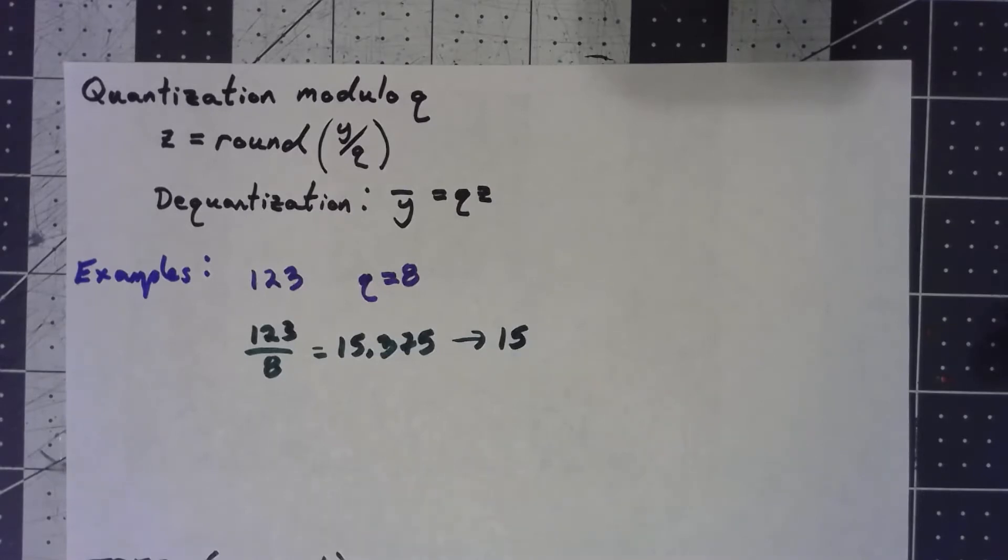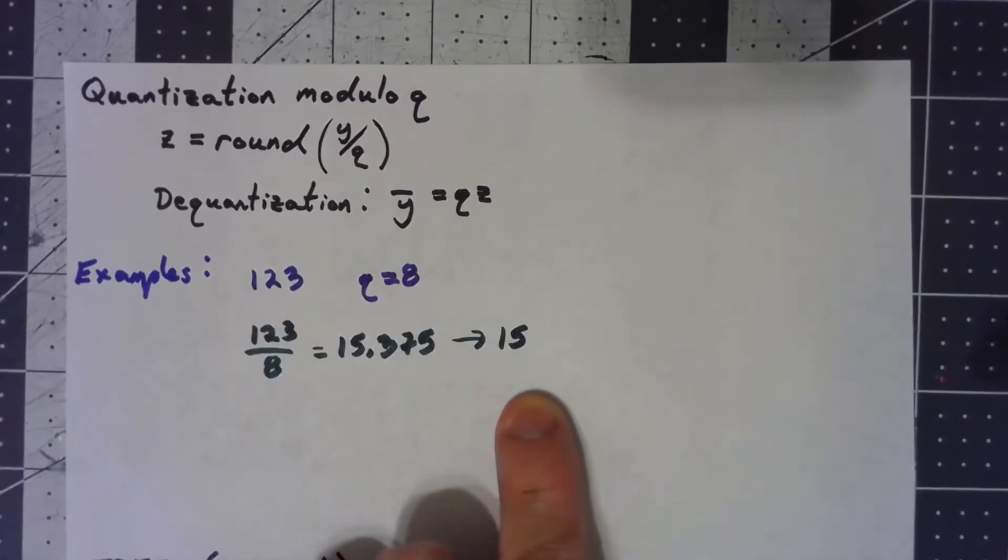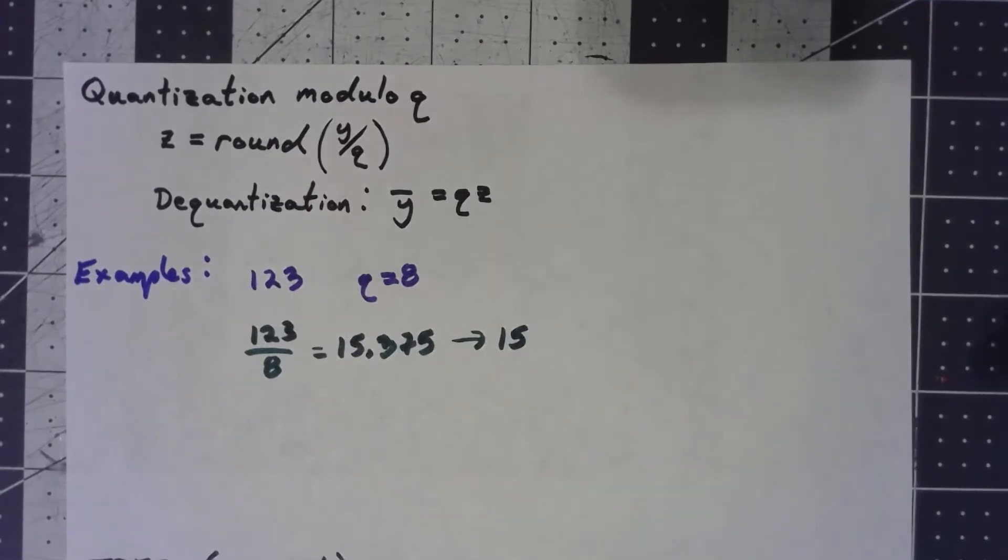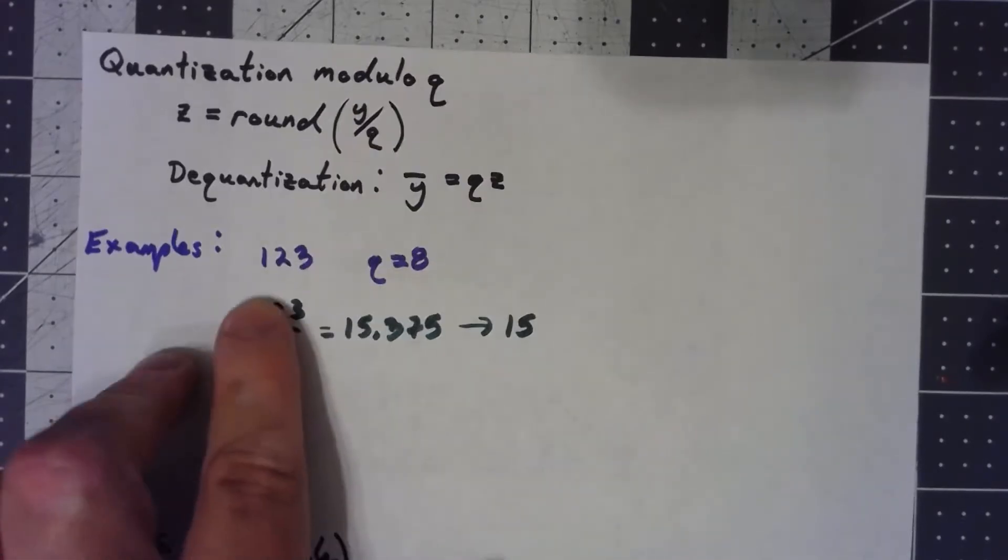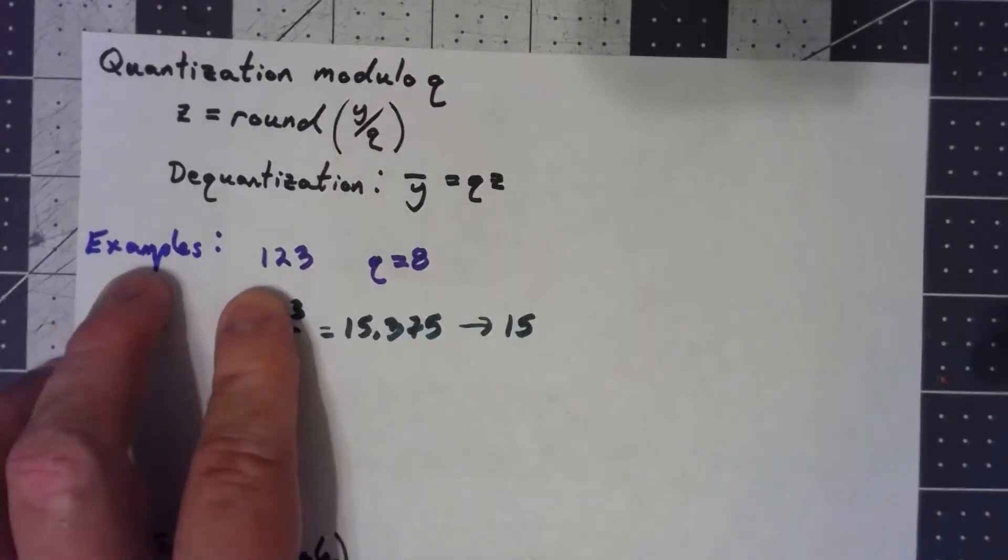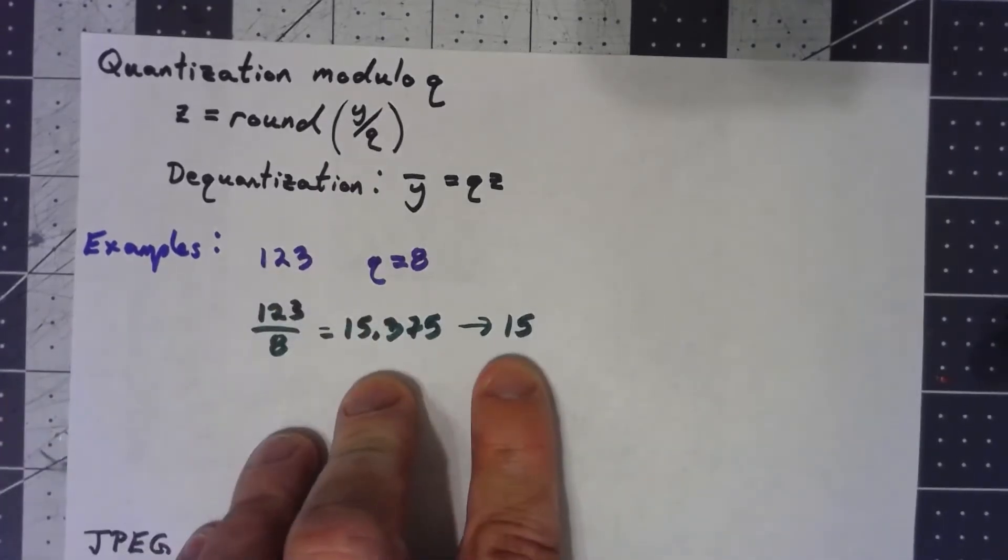And so rather than storing 123, we're storing 15. What effectively we've done is we've taken a number that would require 7 bits to store and gotten it down to a number that would take 4 bits to store.